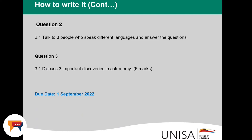For question three, discussing three important discoveries in astronomy: state each discovery and then explain it in depth — a paragraph of maybe three or four sentences. You can't write one sentence and call that explaining. Note that the due date for this portfolio is the 1st of September 2022. Do not submit late; no exception will be given. This portfolio is your examination, so submit on time.